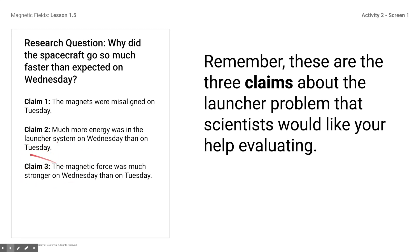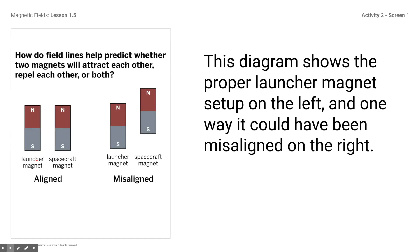So we're trying to figure out why — these are our possible claims. At this point I don't necessarily expect you to have the answer, but based on your reading and what we've learned so far, go ahead and stake a claim: one, two, or three of what you think. This gives us an analysis picture of the proper launch magnet setup and the way it could have been misaligned, so we're going to explore this angle of it being misaligned when the test was run on Tuesday.